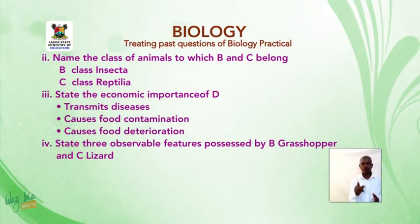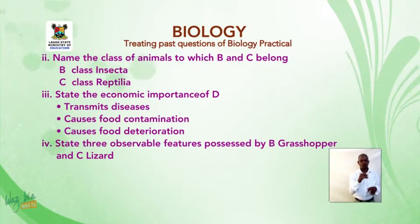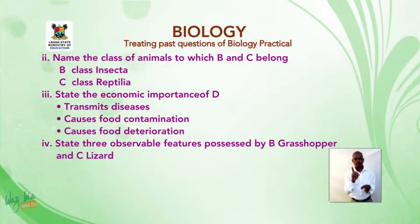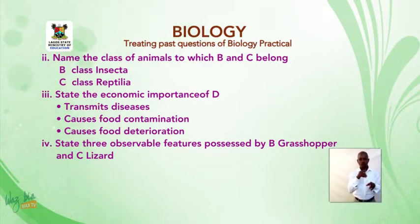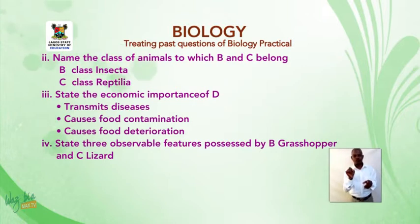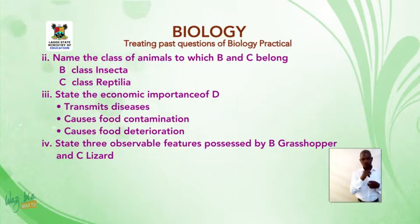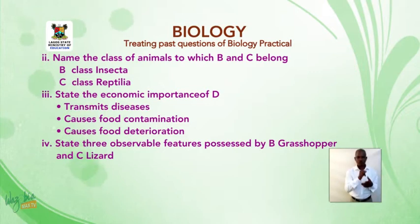Roman numeral 3: state the economic importance of D, which is musca domestica or housefly. The answers are: musca domestica transmits diseases, it causes food contamination, and it causes food deterioration.